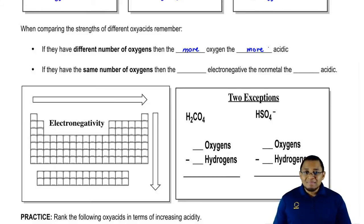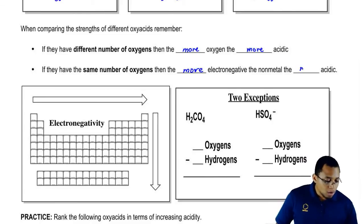But let's say they both have the same number of oxygens. What's the second factor we can look at to break that tie? When they have the same number of oxygens, then the more electronegative the nonmetal, the more acidic.